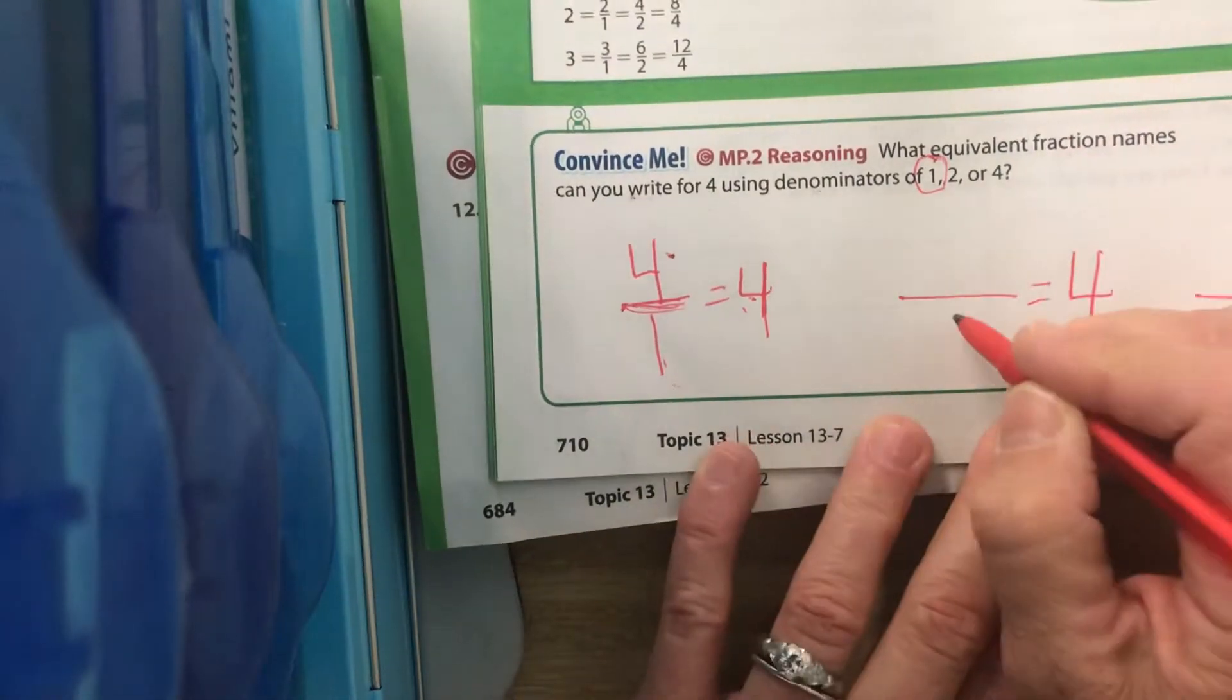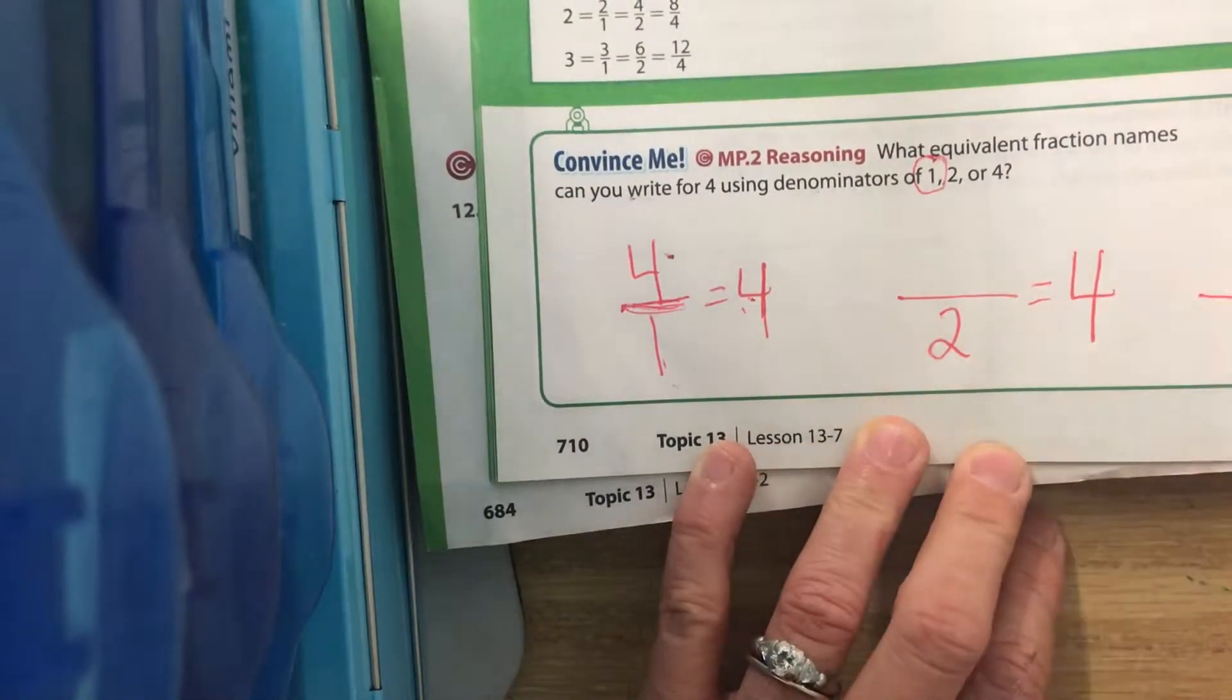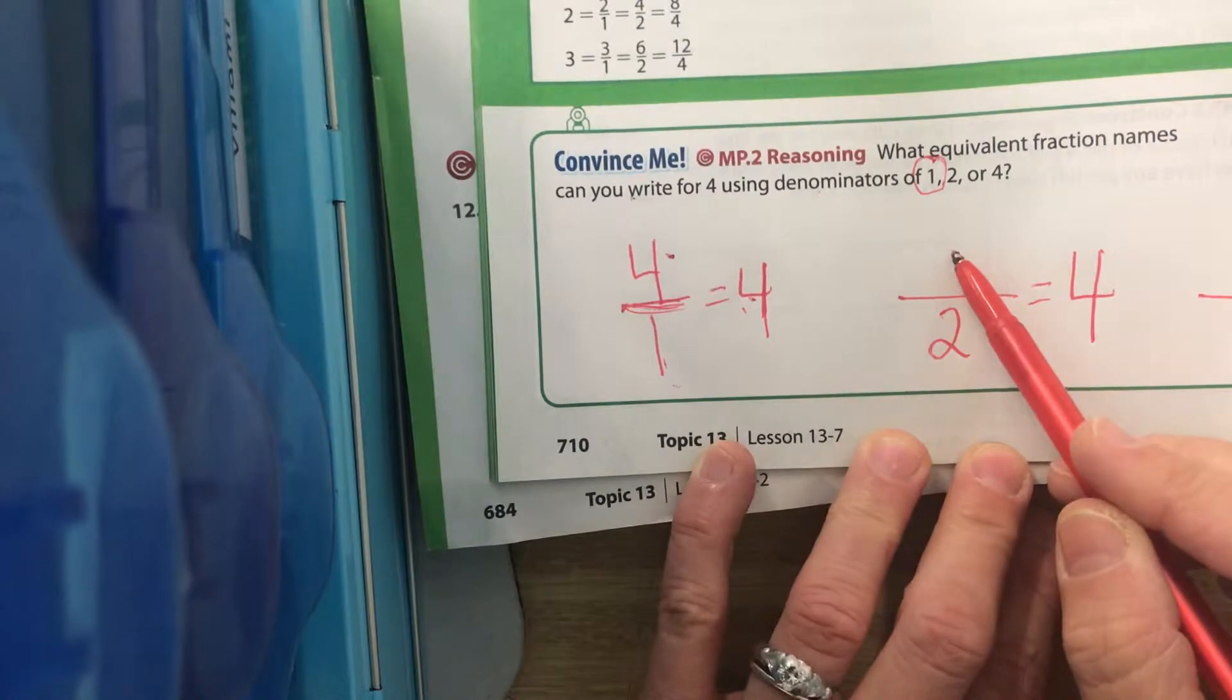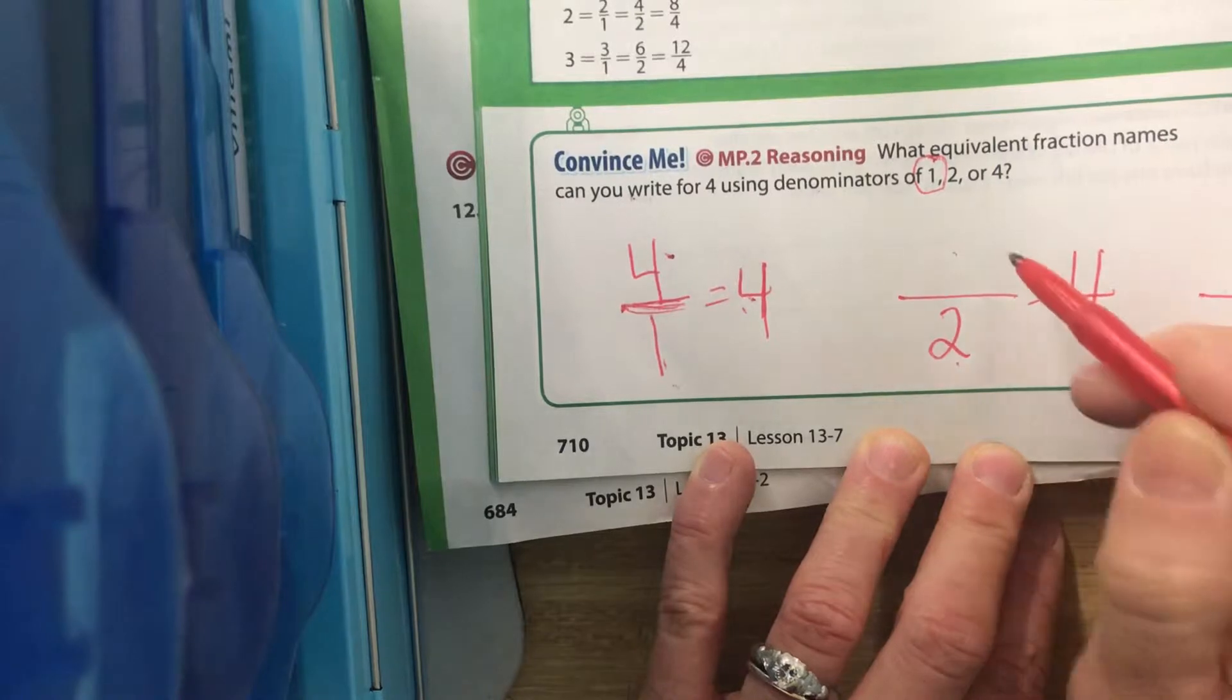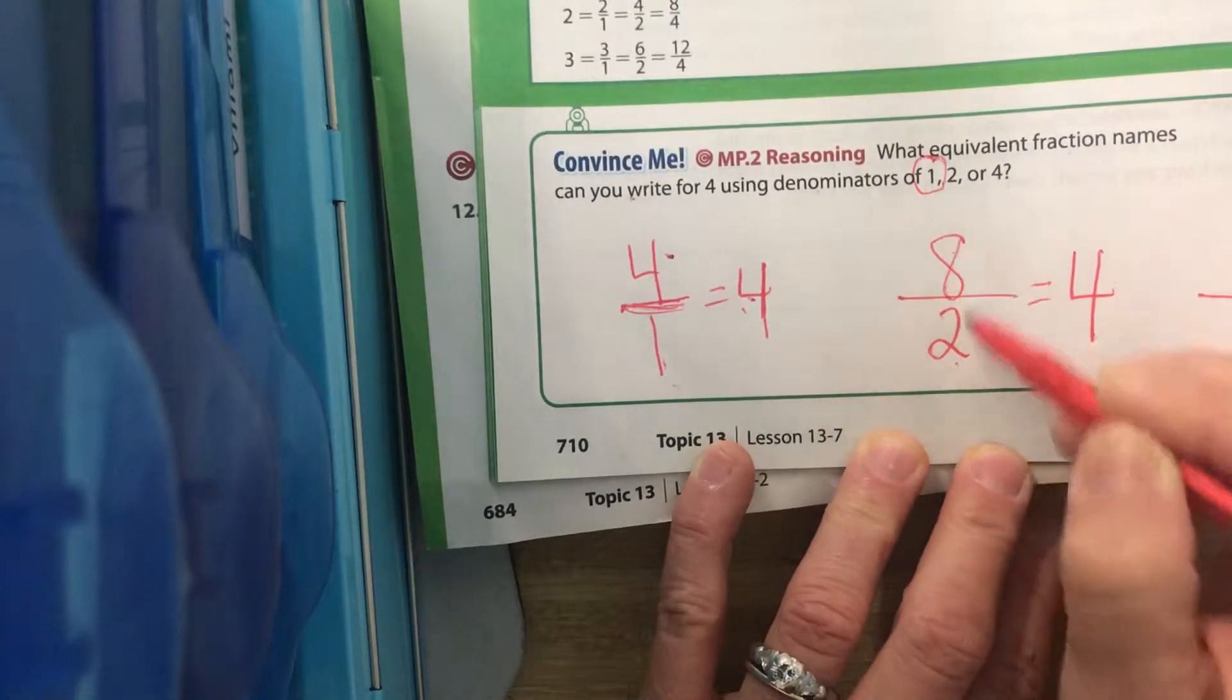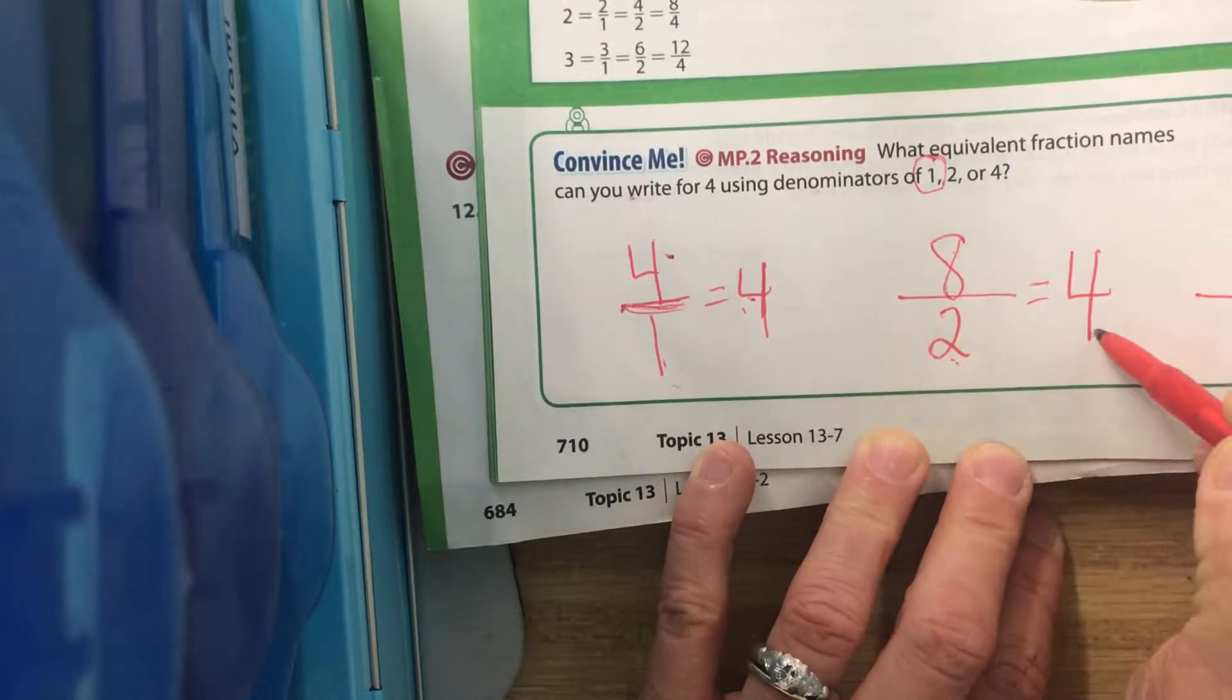We need a denominator of 2. What number divided by 2 equals 4? Class? 8. 8 divided by 2 equals 4.